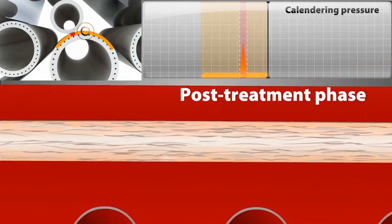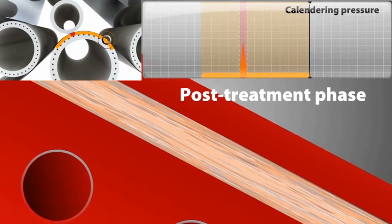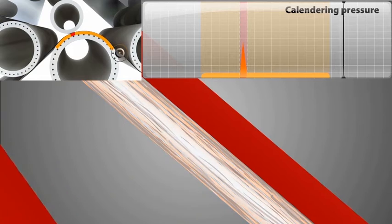In the post treatment phase, the heat treatment continues in a controlled way under a decreased calendaring load supported by the metal belt and the thermo roll to stabilize the calendaring results.